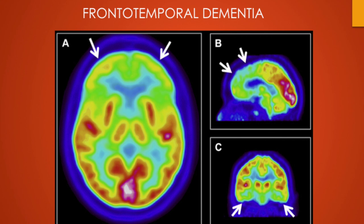In frontotemporal dementia, there is hypometabolism in the frontal cortex, anterior cingulum and anterolateral temporal cortex. The hypometabolism can also affect the caudate nuclei. The pattern of cortical hypometabolism may vary in different forms of frontotemporal dementia, but most importantly — as the name itself suggests — you have to focus on analyzing the frontal and temporal cortex.